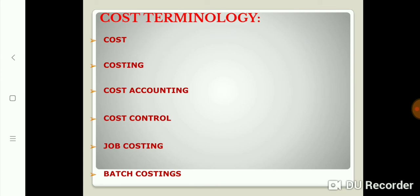In cost accounting, there are some basic terminologies. Firstly, cost means the amount of expenditure incurred on a particular thing, or the total expenses which are incurred on producing a particular product or unit. Another terminology is costing, which is the technique and process of ascertaining the cost. The third concept is cost accounting itself: the application of cost control methods and the ascertainment of profitability of activities carried out or planned.